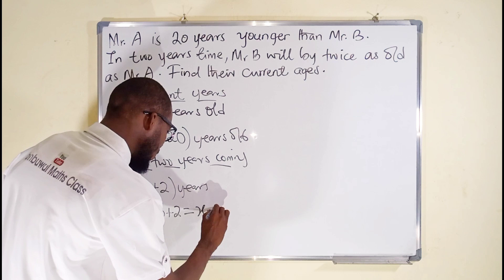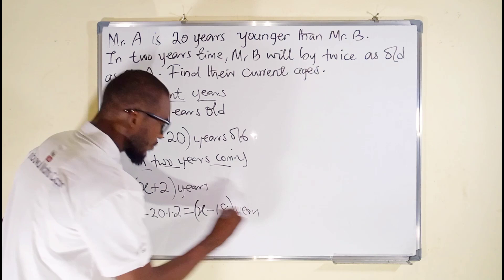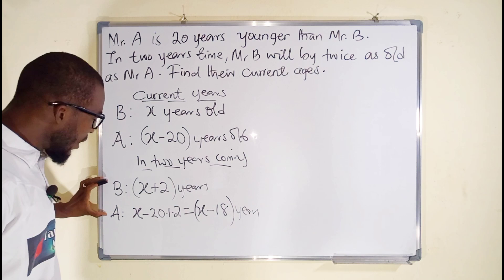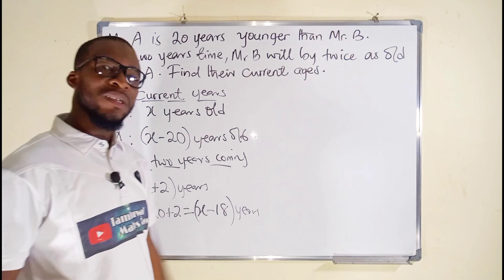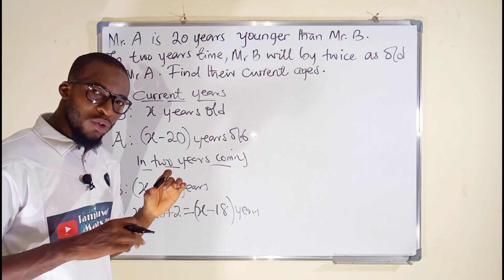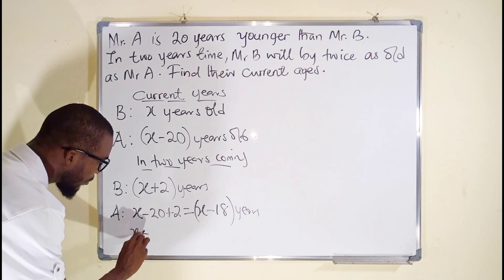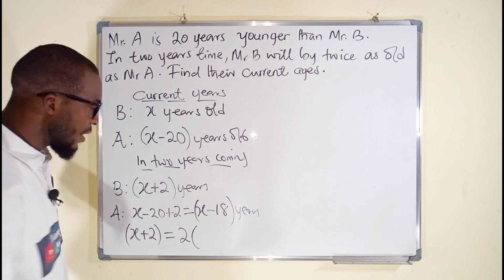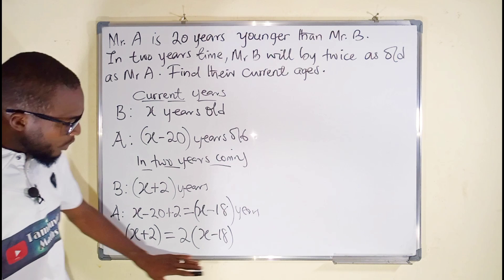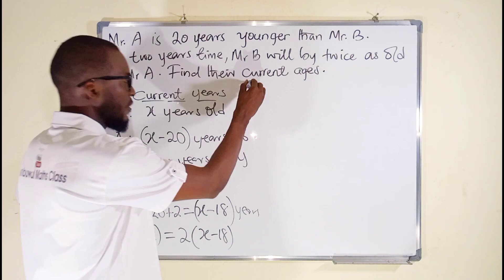We learned that in two years Mr. B will be twice as old as Mr. A, so you multiply Mr. A's age by 2 to get Mr. B's age in two years. Therefore: x plus 2 equals 2 multiplied by (x minus 18). This is the equation we need to solve for x, which will give us the current age of Mr. B.